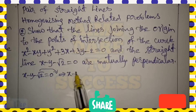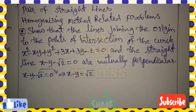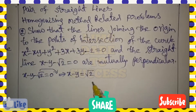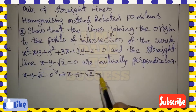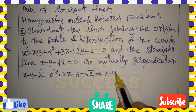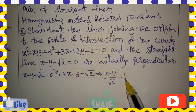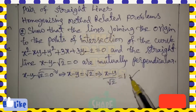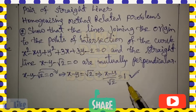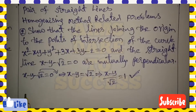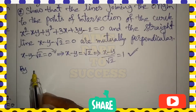The given line is x - y - √2 = 0. Taking the constant term -√2 to the right side, we get x - y = √2. But the right side must equal 1, so dividing both sides by √2 gives (x - y)/√2 = 1. After getting the right side value as 1, we can apply the homogenizing method.